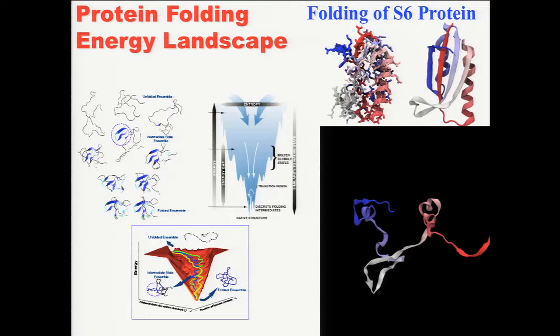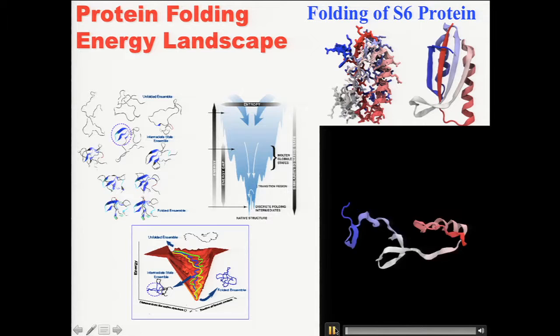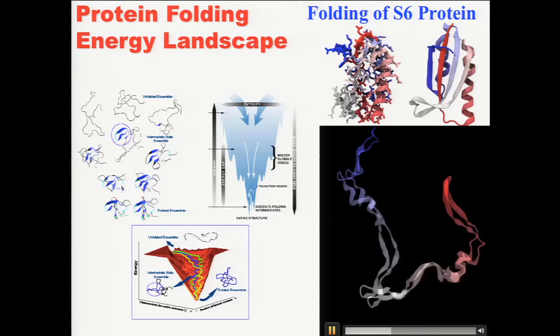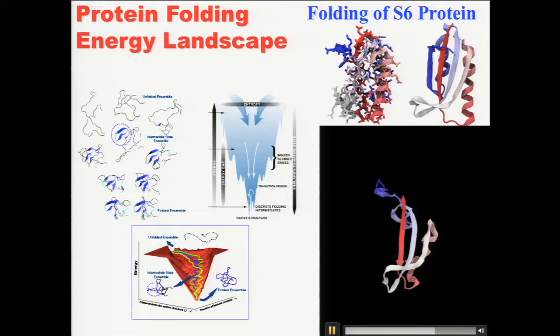In a real simulation, you start from multiple unfolded states and come down to a few states. The width of the funnel is what we call configurational entropy — the logarithm of the number of states. If you look at the simulation, the protein is actually searching all the way around, getting part of the structure, coming down, and you see how it goes all the way until it finds its final structure. It's not a downhill process — it's a search process that goes down.